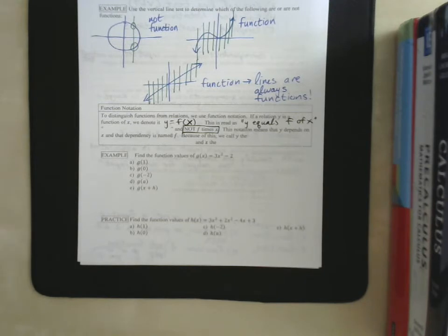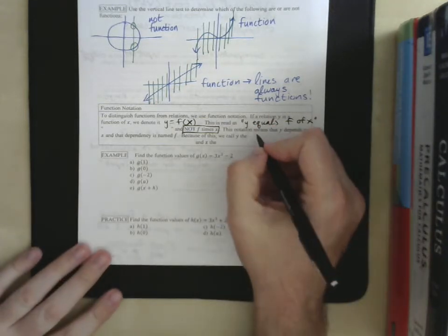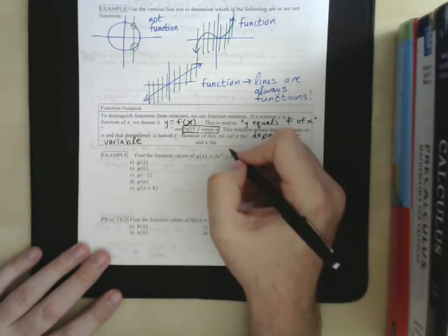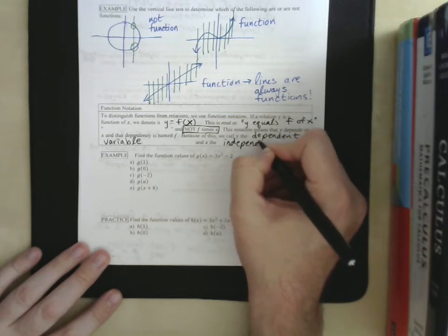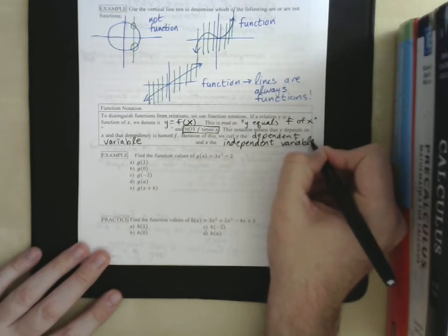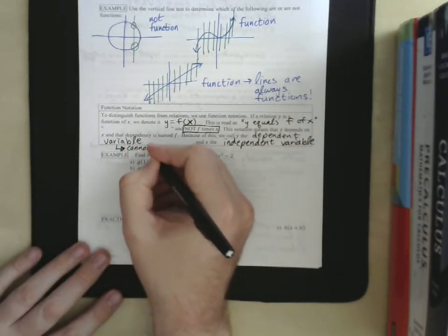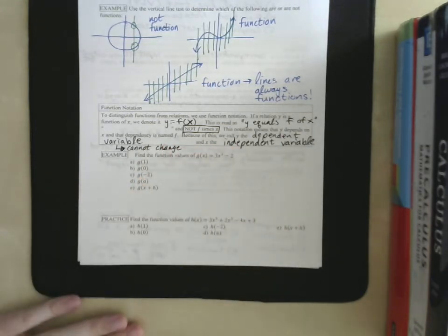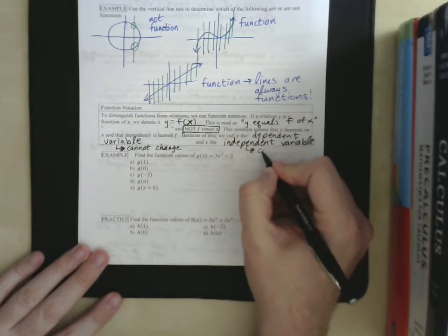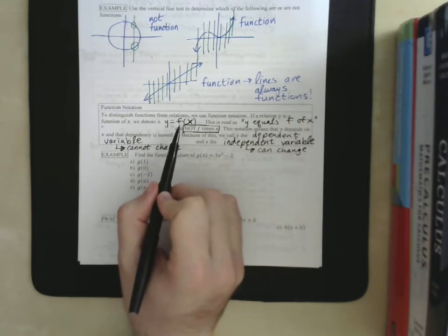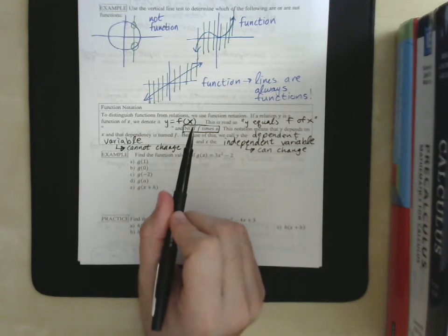f is the name of the function that allows us to talk about it without having to list the equation every time. I can just say f of x or you can insert any letter, g of x, h of x, l of x. So, because of this, we call y the dependent variable and x the independent variable. And if you're wondering what's the difference, well, the dependent variable cannot change. It's going to equal whatever it equals based on the independent variable, which is what we can change. The way that we think about this is we choose an x, the function f tells us what y equals. We don't pick the y. We pick x, we get y.